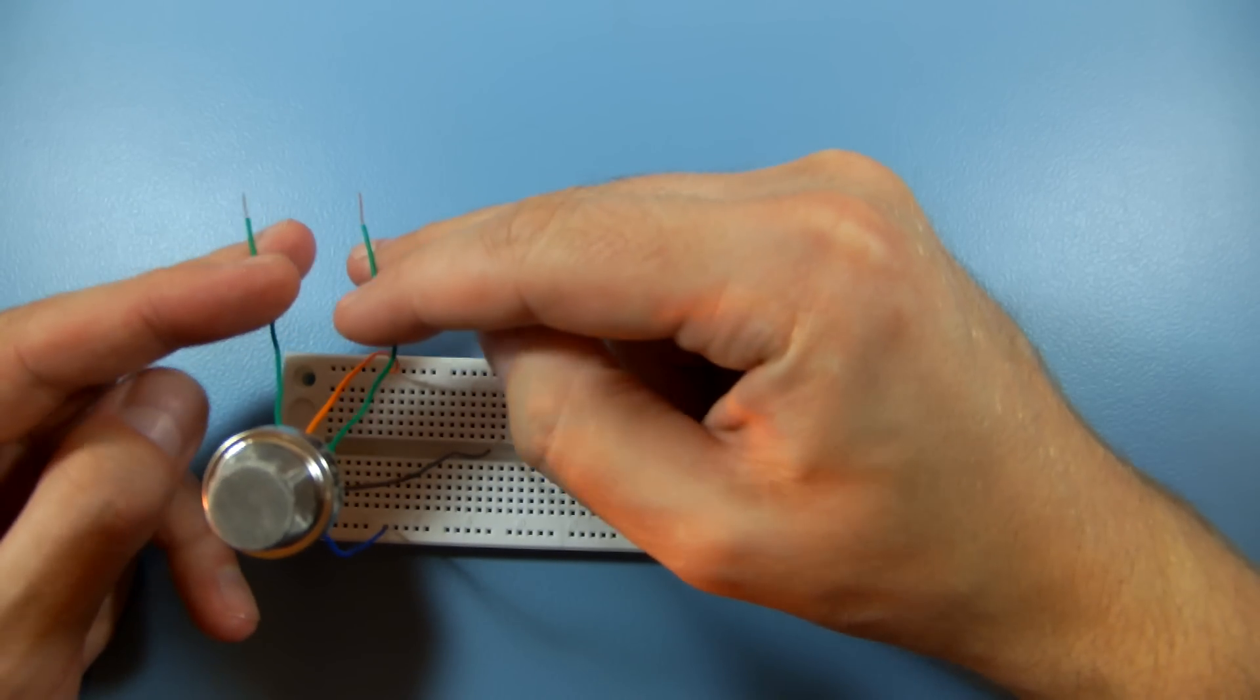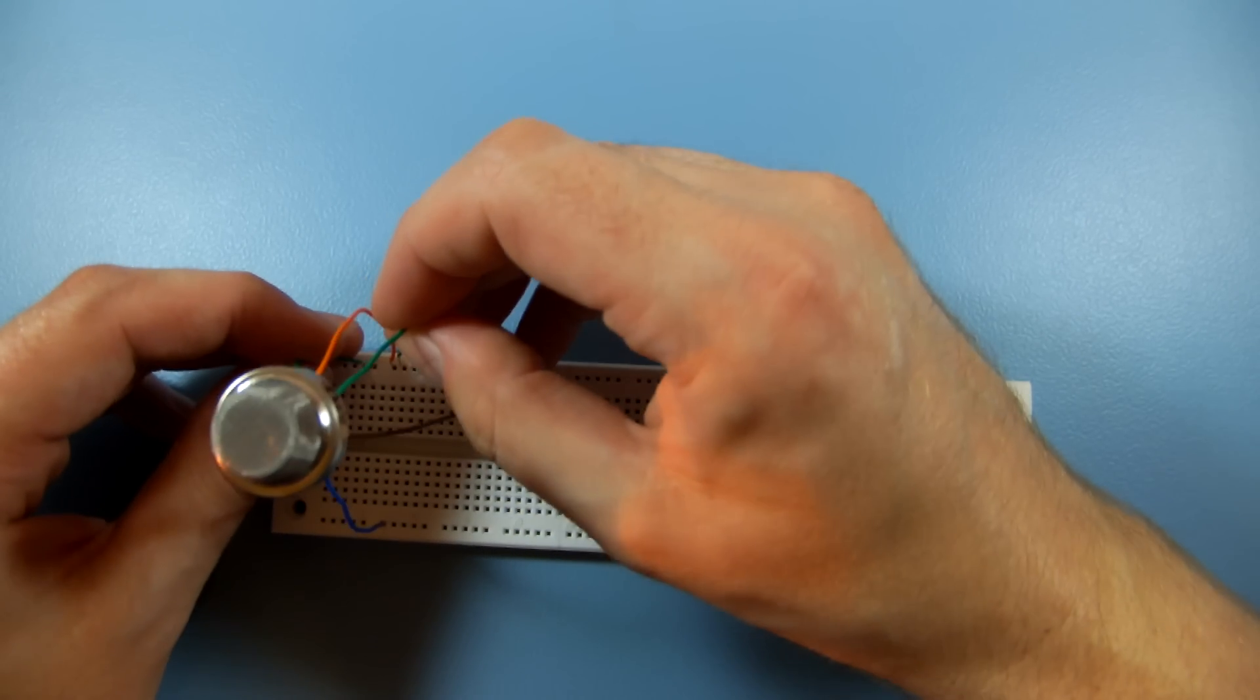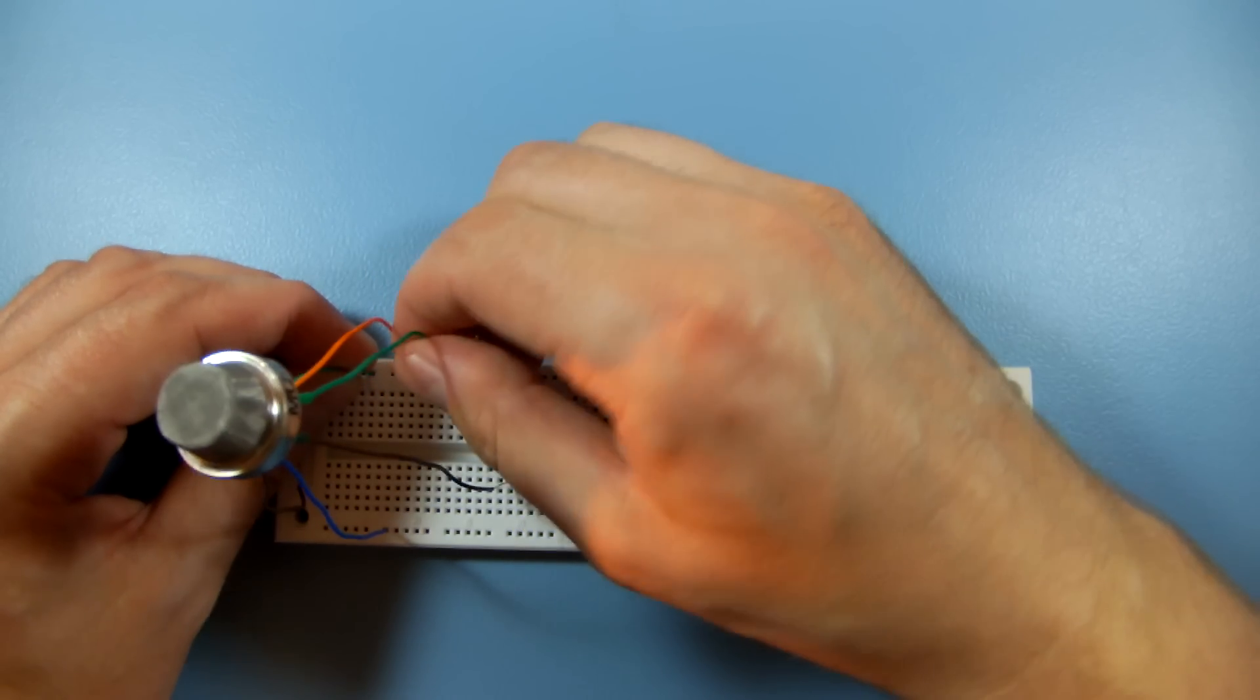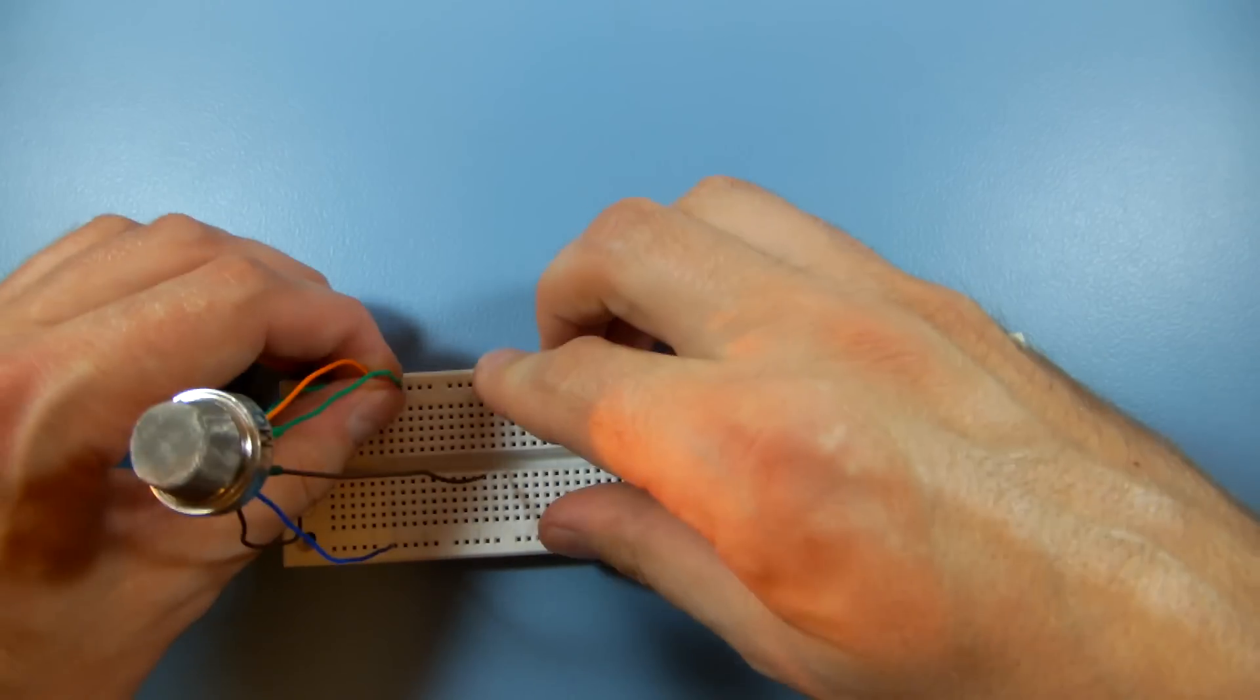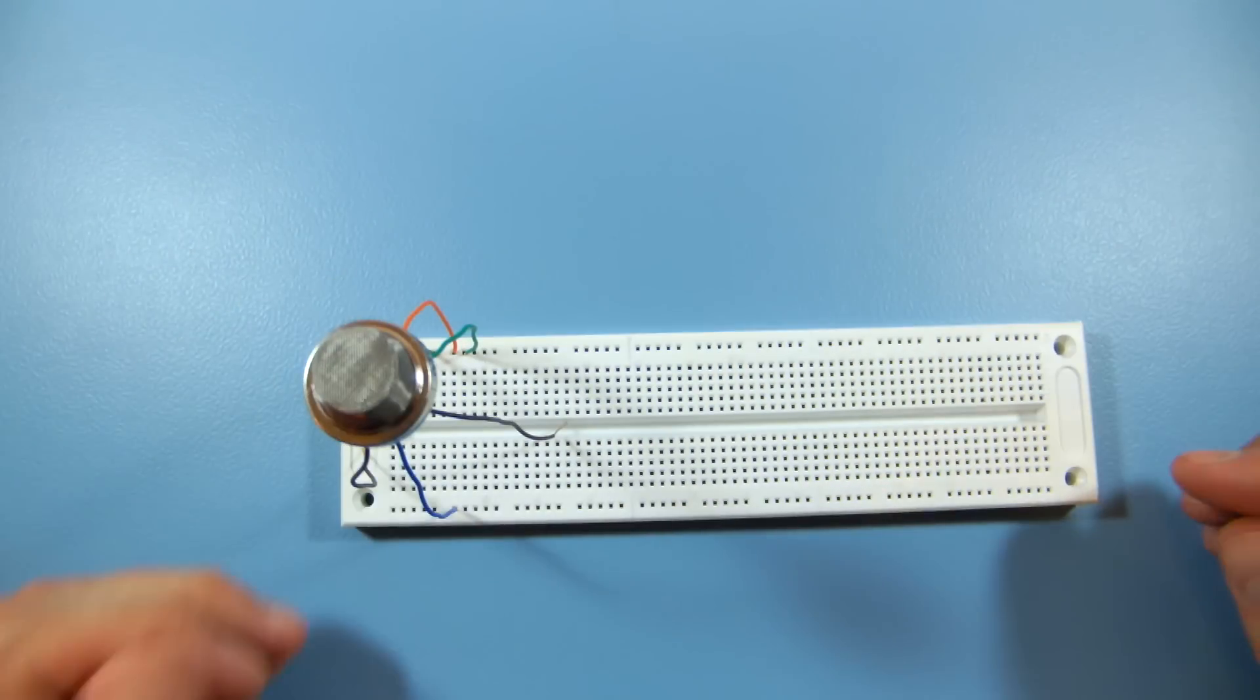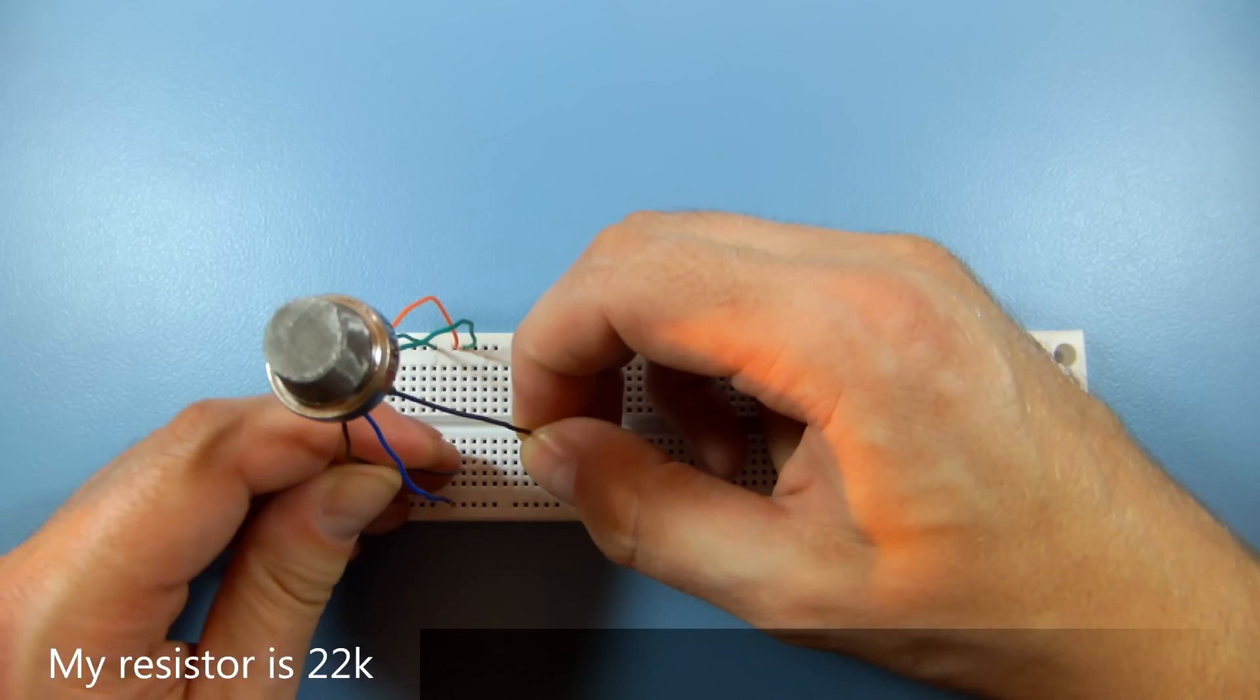Connect both A wires to the positive rail on the breadboard. Hook up the B wires to the same row and to ground via a 20K resistor.